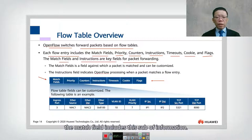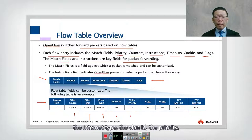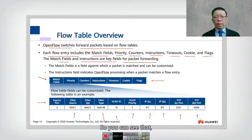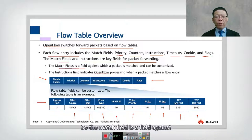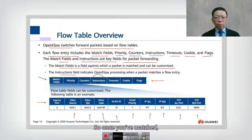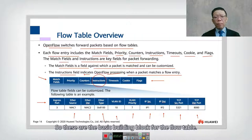The match field includes information such as ingress port, source MAC address, destination MAC address, EtherType, VLAN ID, priority, IP source, IP destination, port, and destination — very similar to Layer 2 and Layer 3 packet headers. The match field is the field against which a packet is matched and can be customized. The instruction field defines the OpenFlow processing action when a packet matches a flow entry. These are the basic building blocks for the flow table.